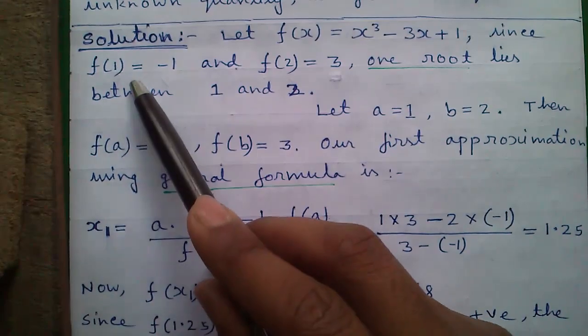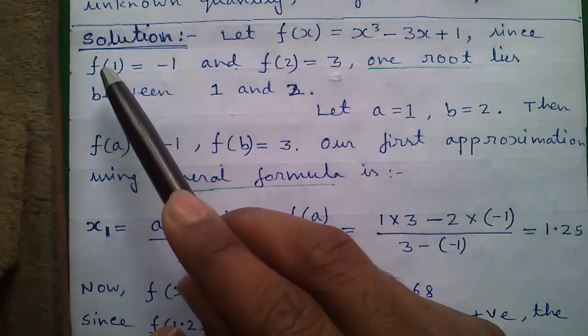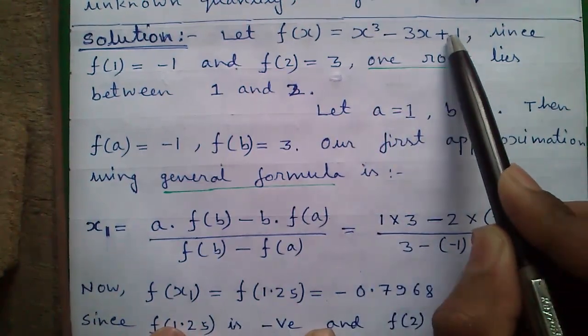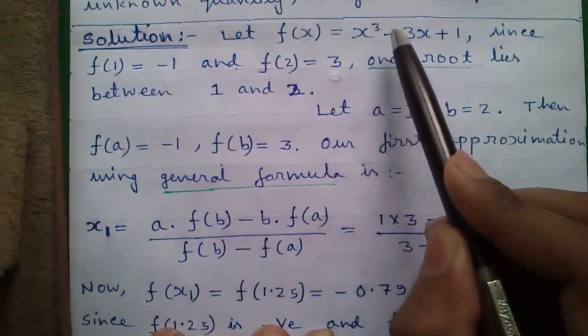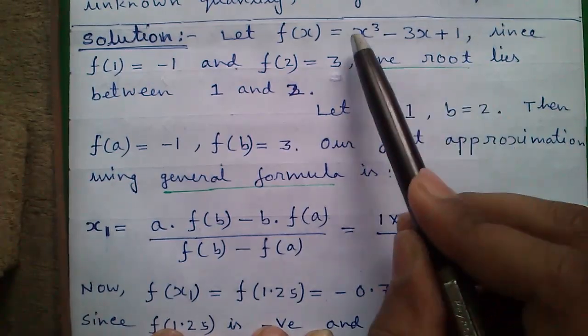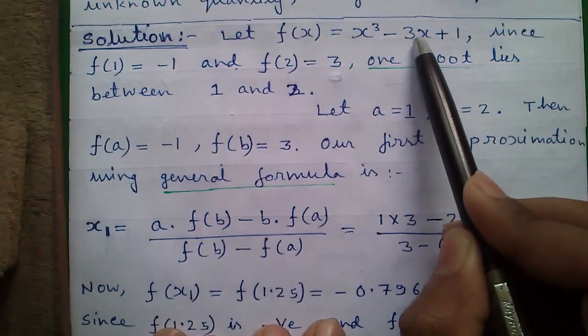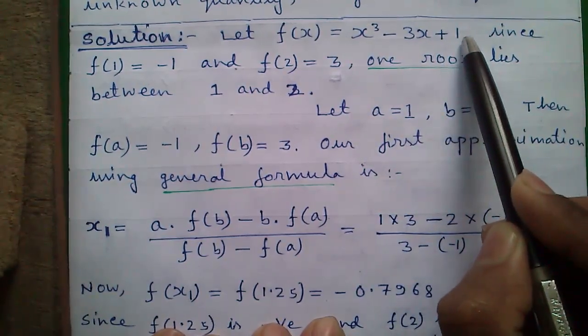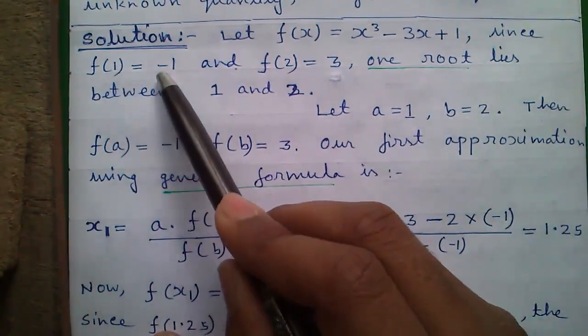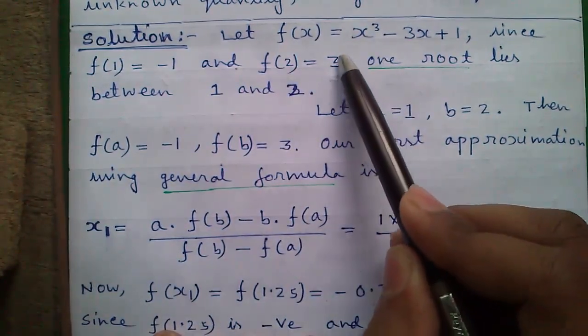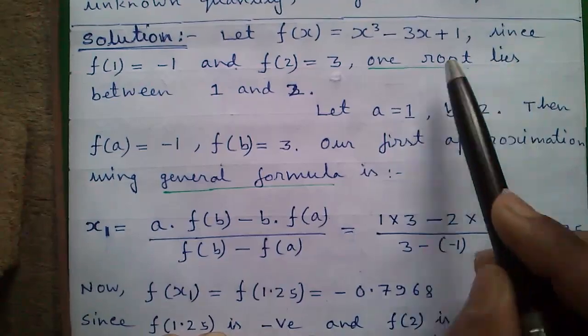Our f(x) or function of x is x³ - 3x + 1 given in the question. Since f(1) = -1, if we substitute 1 in place of x in the equation, we will get -1. 1³ minus 3 into 1 plus 1, so 1³ is 1 minus 3 into 1 minus 3 which is -2 plus 1 which is -1. So f(1) = -1. Similarly, if we substitute 2 in place of x, we will get 3.